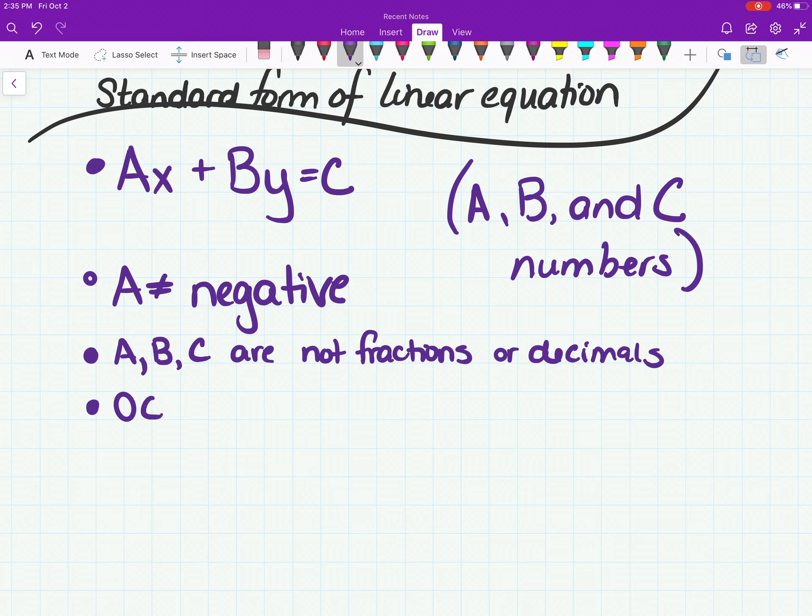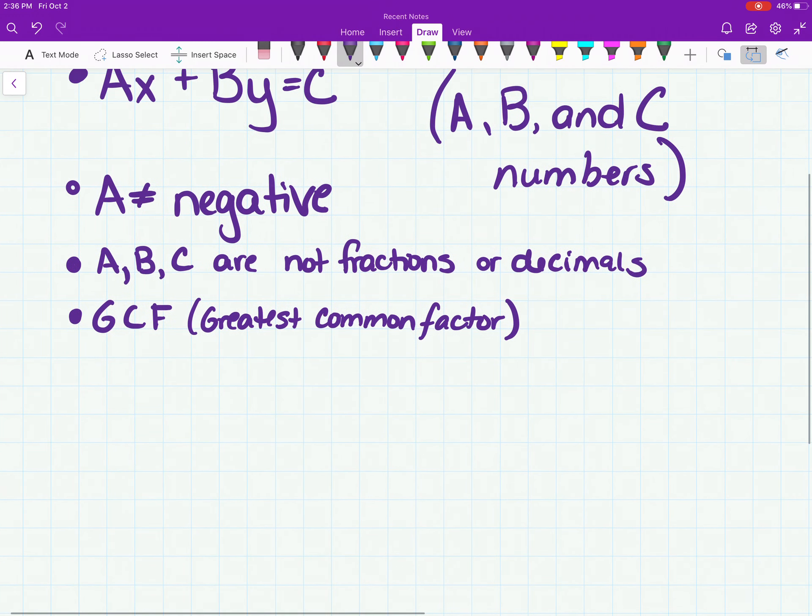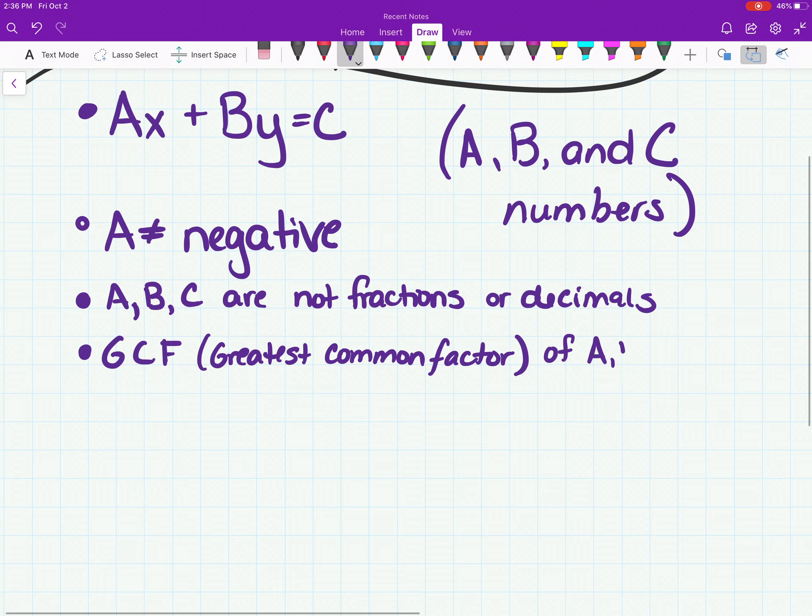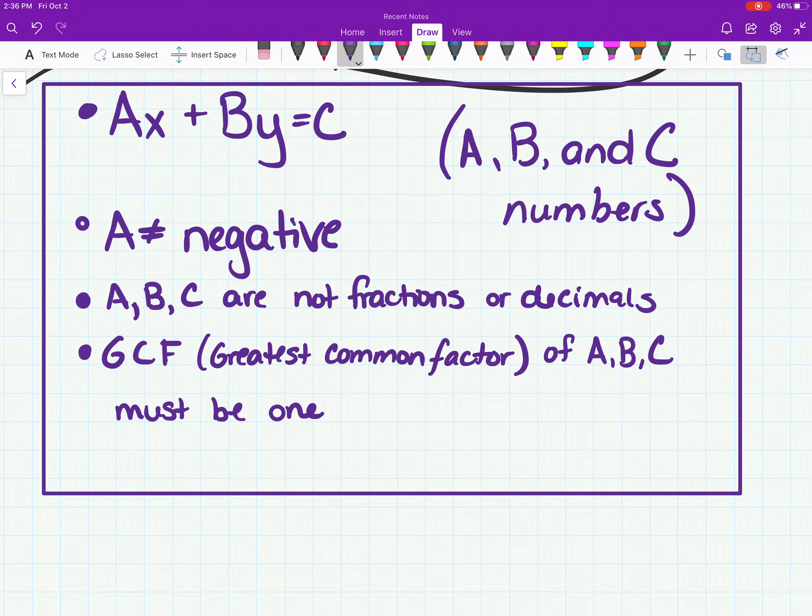And then the other thing, and this is the one that people don't quite get all the time, GCF, greatest common factor of A, B, and C must be 1. Which means that A, B, and C can't be divided by any other number, all of them the same number. So I have four examples that we have to fix and make them follow these rules. That's going to be the key when we're doing standard form, is make sure you're following the rules.